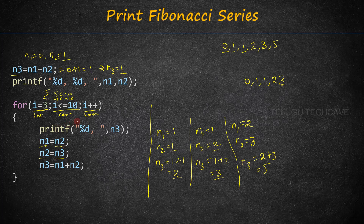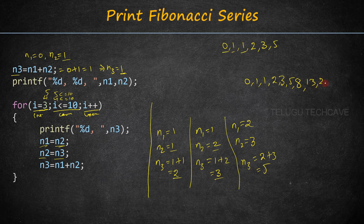The first 10 numbers will be printed in the Fibonacci series: 0, 1, 1, 2, 3, 5, then 8, then 13, then 21, then 34.